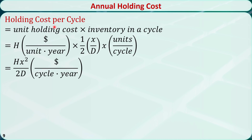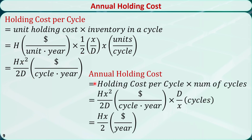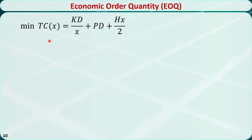Now let's calculate the holding cost per cycle and the annual holding cost. The holding cost per cycle equals the unit holding cost H (dollars per unit per year) times the inventory in a cycle, which is the area of the triangle: base (x/D) times height (x) divided by 2. The annual holding cost equals the holding cost per cycle times the number of cycles D/x, simplifying to H·x/2 dollars per year. The annual total cost TC(x) is the sum of the annual ordering cost, purchasing cost, and holding cost.